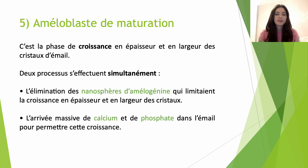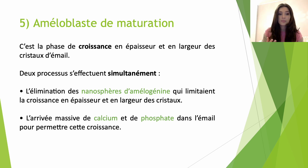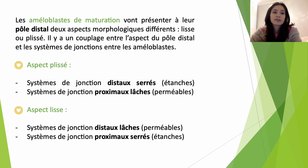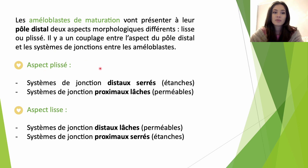On arrive à l'avant-dernier stade : l'améloblaste de maturation. La maturation, c'est la phase de croissance en épaisseur mais aussi en largeur des cristaux d'émail. Il y aura deux processus simultanés : d'une part l'élimination des nanosphères d'amélogénine qui limitait la croissance en épaisseur et en largeur des cristaux, et d'autre part l'arrivée massive de calcium et de phosphate dans l'émail. Les améloblastes de maturation vont présenter à leur pôle distal deux aspects morphologiques différents : un aspect lisse et un aspect plissé. Il y a un couplage entre l'aspect du pôle distal et les systèmes de jonction entre les améloblastes : lorsqu'on a une bordure plissée, on a des jonctions disto-serrées et proximo-lâches, et inversement pour l'aspect lisse.